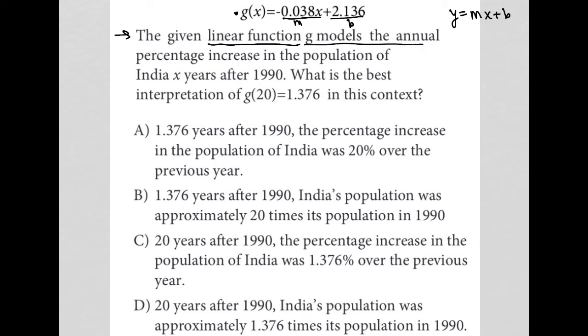Well, the question told us that g models the annual percentage increase in the population at a certain number of years. In this case, that certain number of years is 20. So, 20 years after 1990 places us in the year 2010. In the year 2010, we expect that the percent increase is 1.376%.